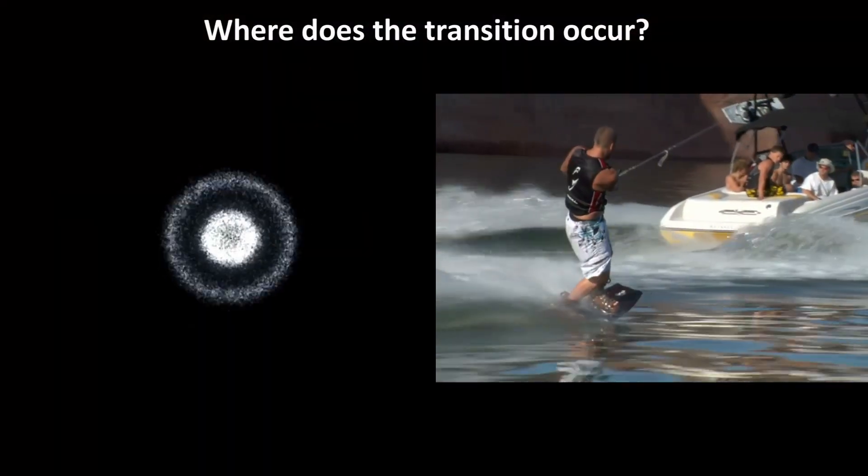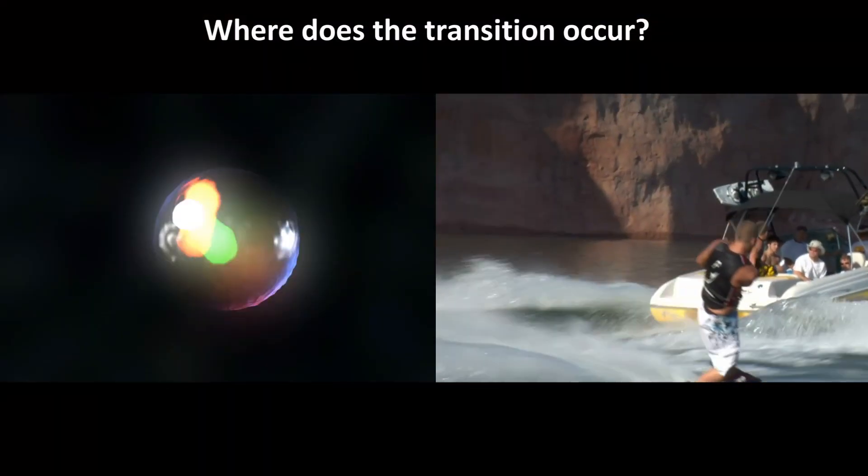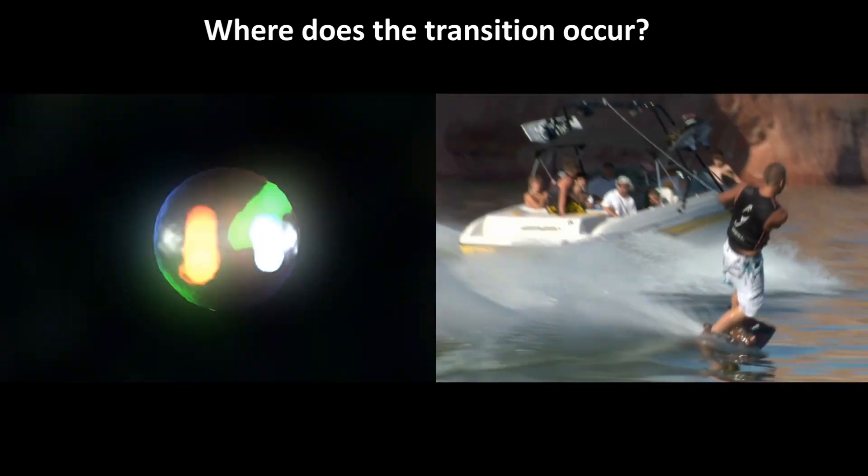Where does this transition from time symmetry at the quantum level to time asymmetry at the macro level occur? It begs the question, what is time anyway? How did it begin? And will it always go forward? That's coming up right now.